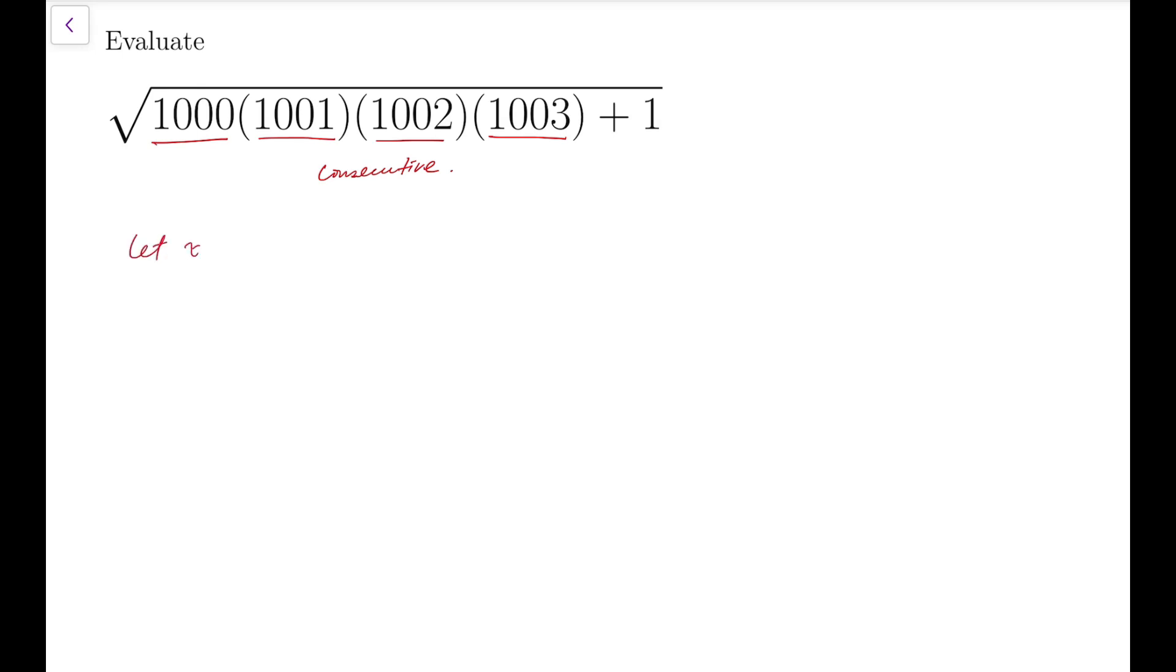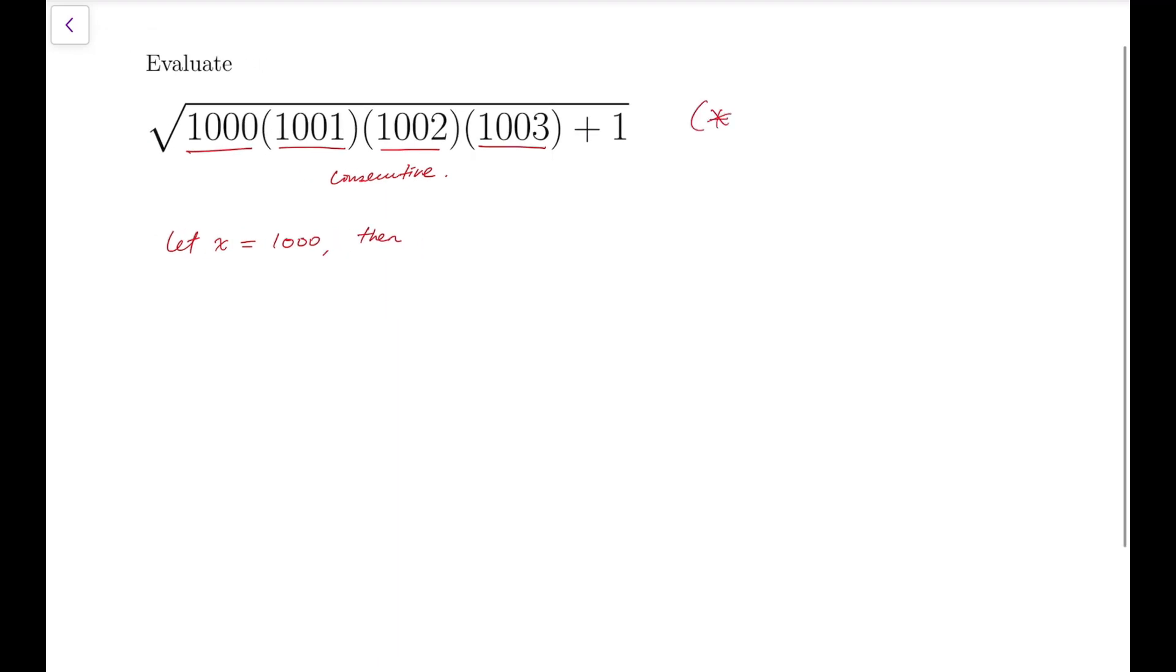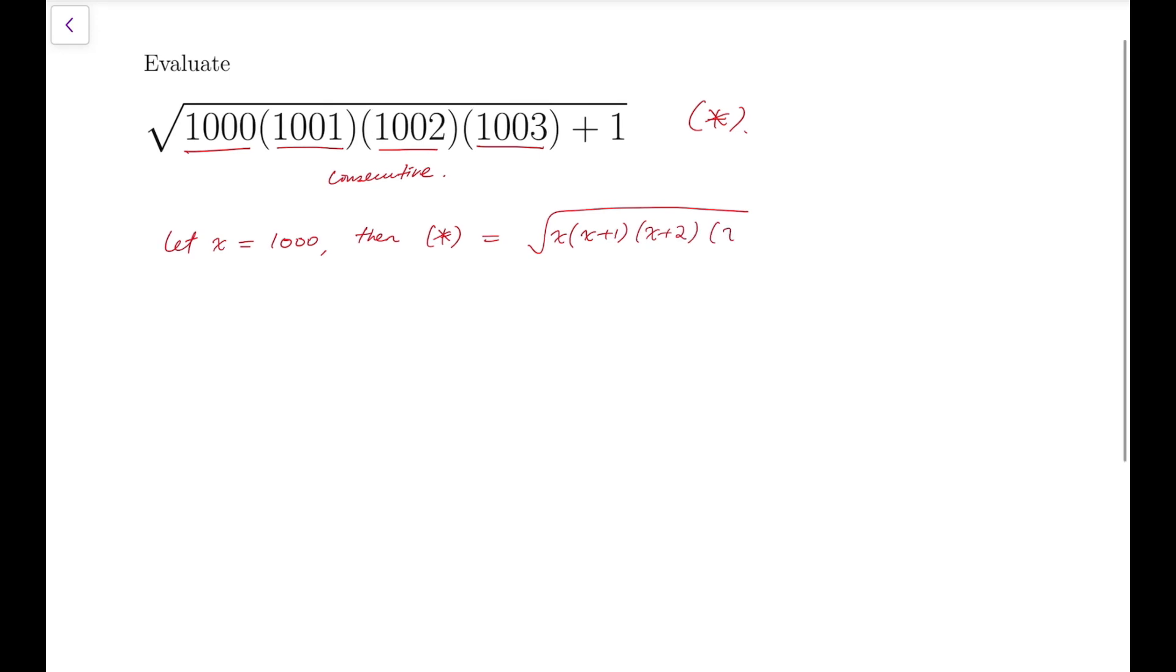So I would let one of them to be x, say a thousand, then maybe I label this as a star. Then star equals the square root of x times x plus 1 times x plus 2 times x plus 3, and the whole product added by 1.